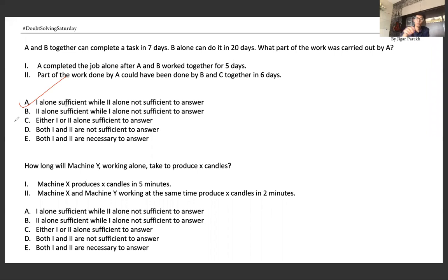And the second one: How long will machine Y, working alone, take to produce X candles? Machine X produces X candles in five minutes. Machine X and Y working together produce X candles in two minutes. I have both statements, and I will be able to do it, so I need both of these. I will also need both. So both I and II are necessary to answer.